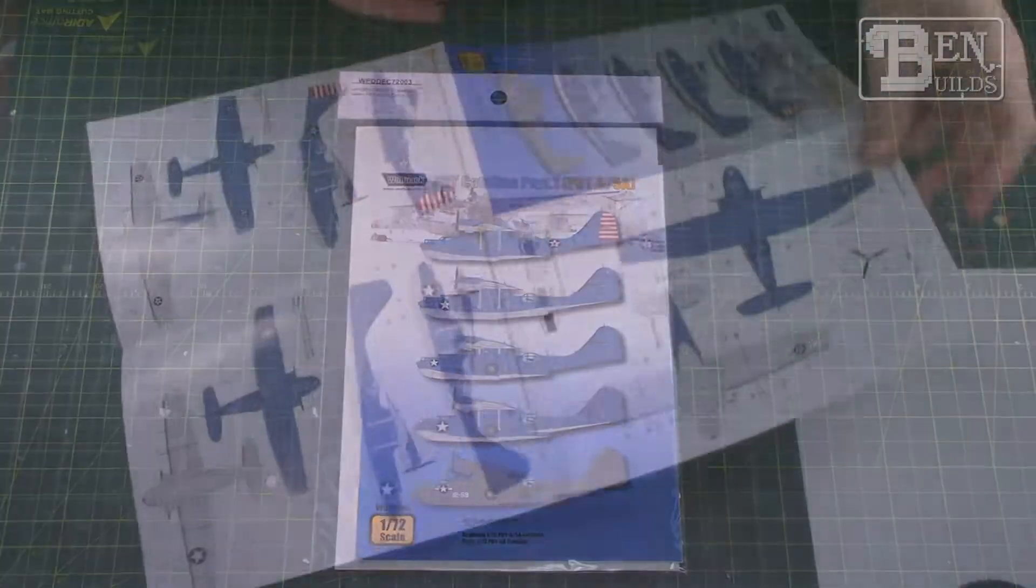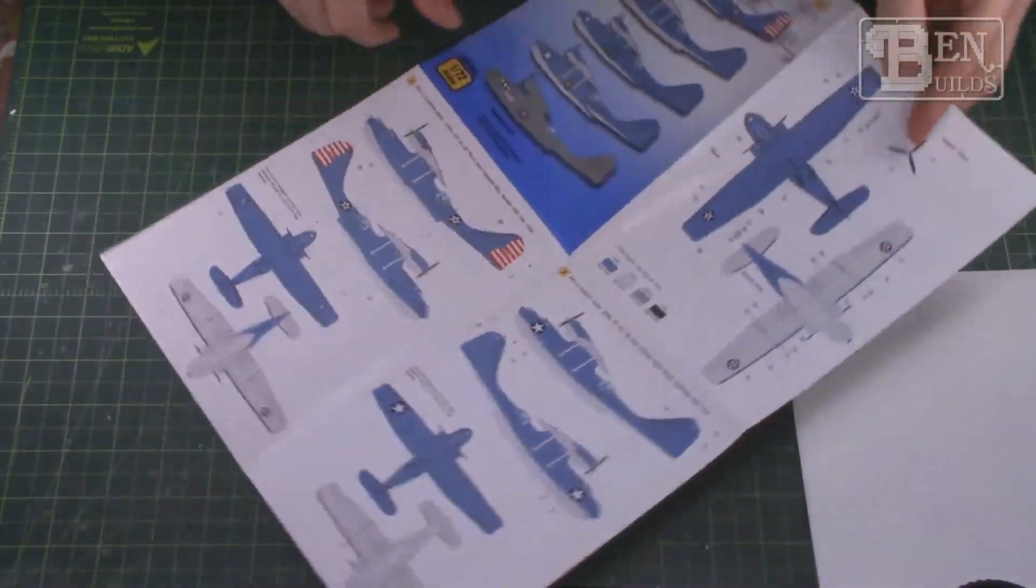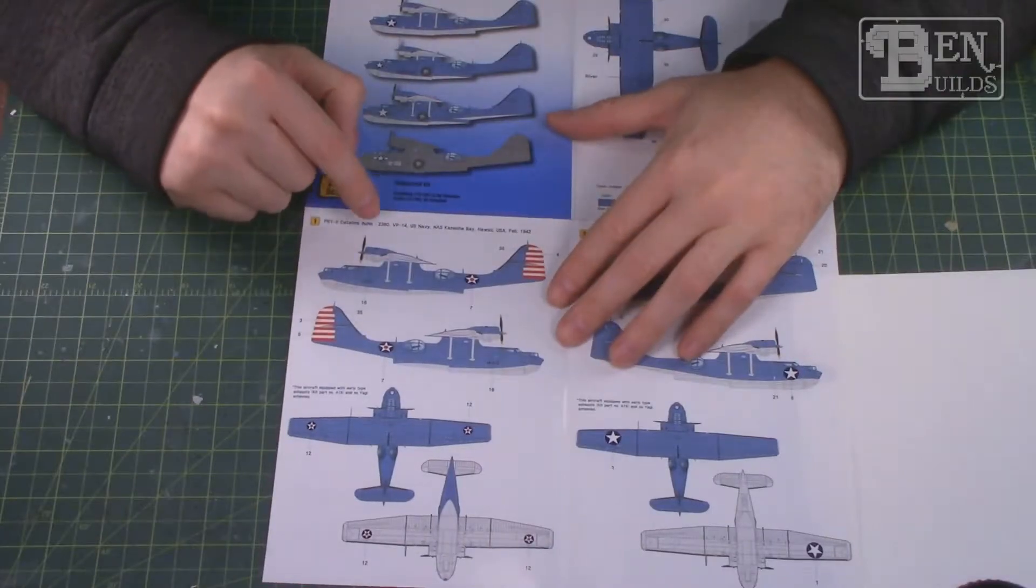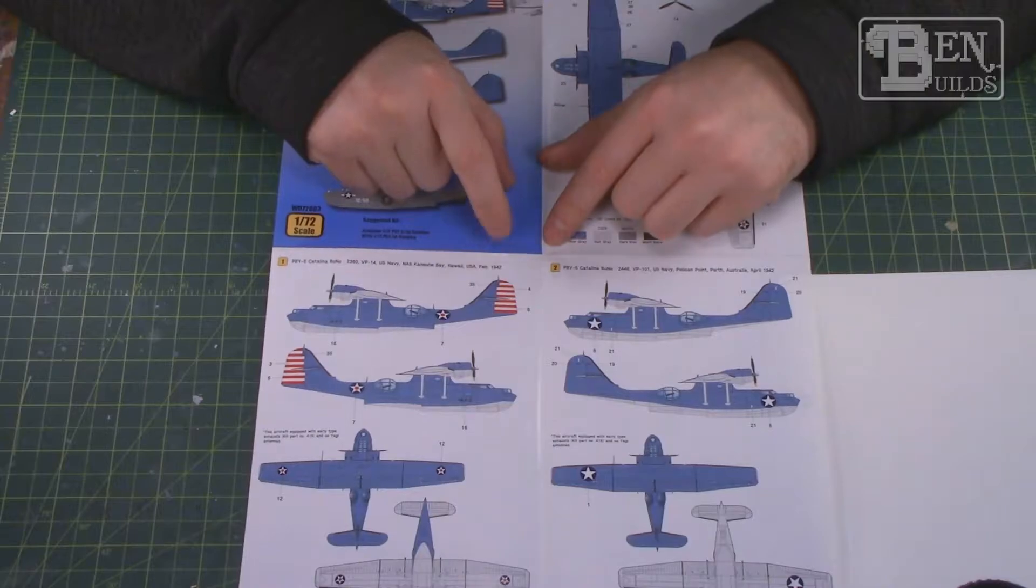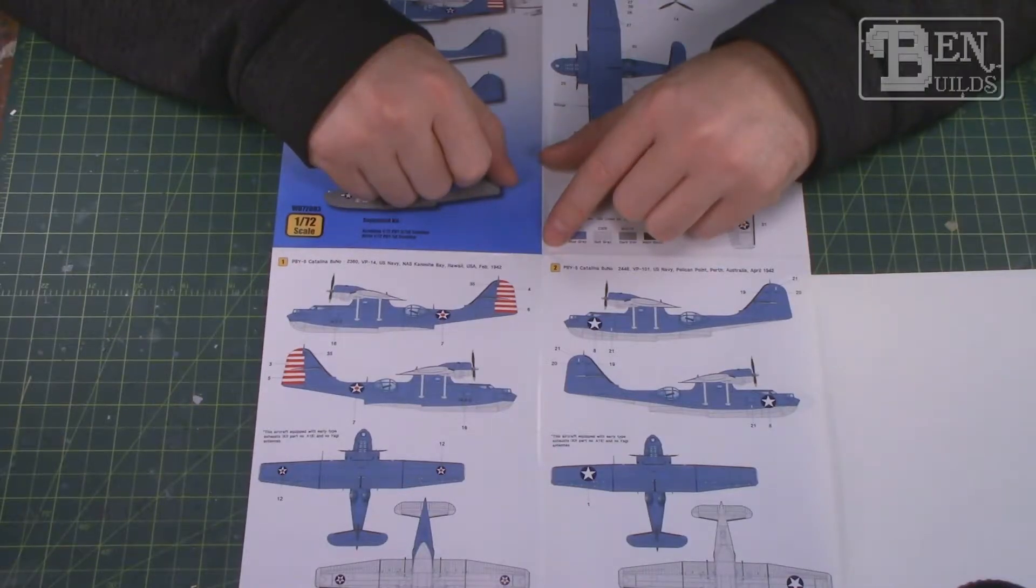This is actually from Wolfpack. This is a PBY Catalina decal set, and as you can see, we have quite an interesting array of different Catalinas that we can build. And this is what I was kind of leaning towards. This is from 1942, however, so we could actually backdate this to 1941 and maybe we can go ahead and find some reference photos to show this in a bit more detail.